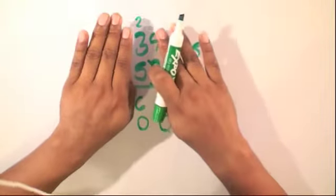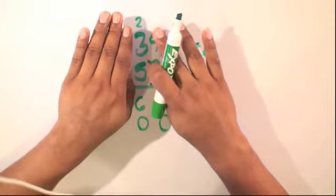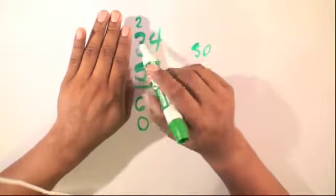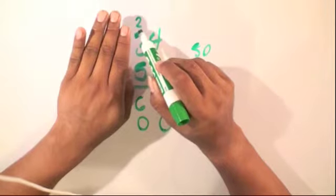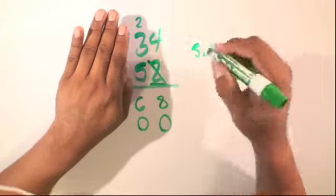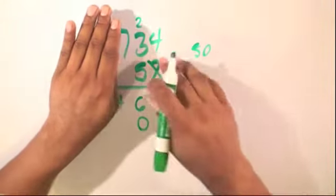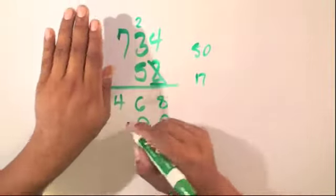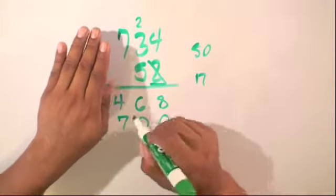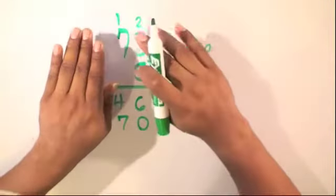Looking at this, we have 5 times 3, which is equal to 15. And we're going to add the 2, so our result is going to be 17. Again, we have only one place for one digit. We'll place the 7 down here and the 1 up on the hundreds place.